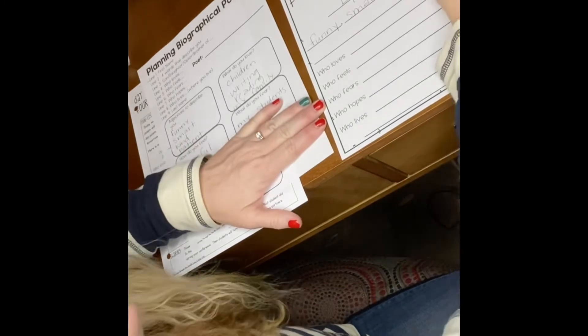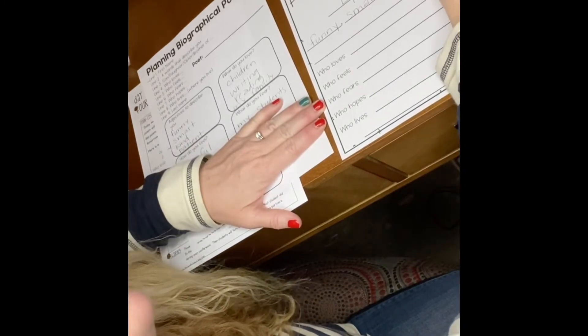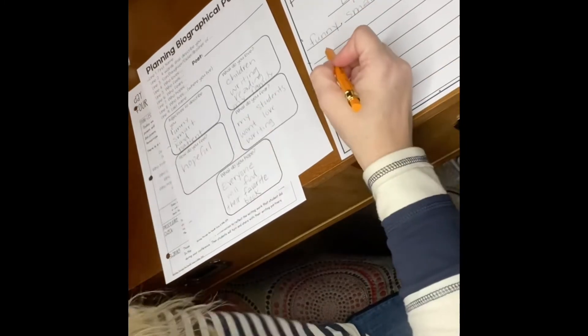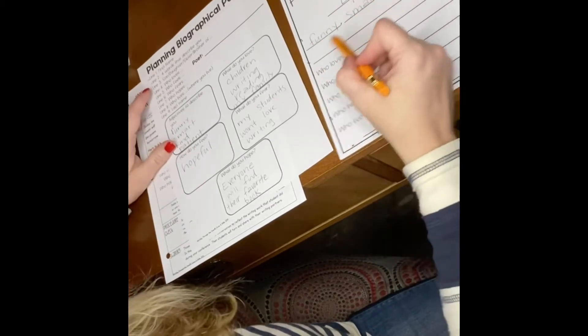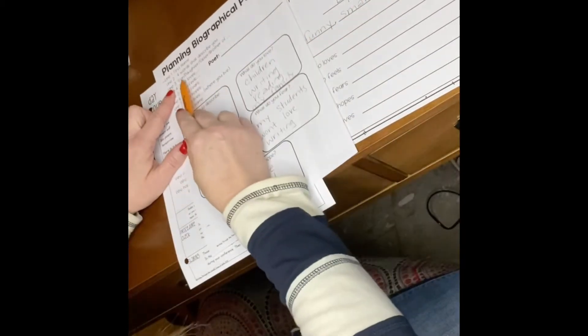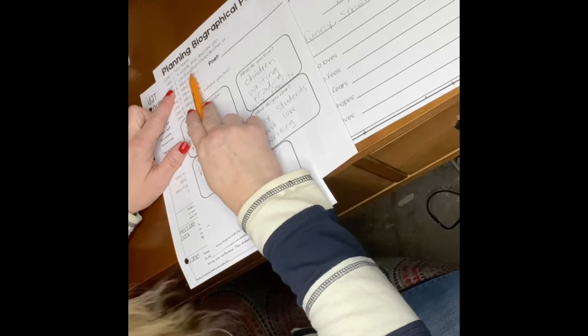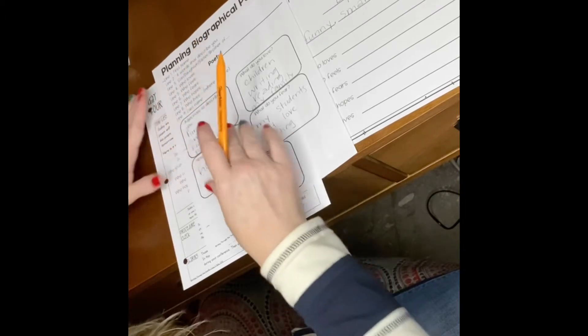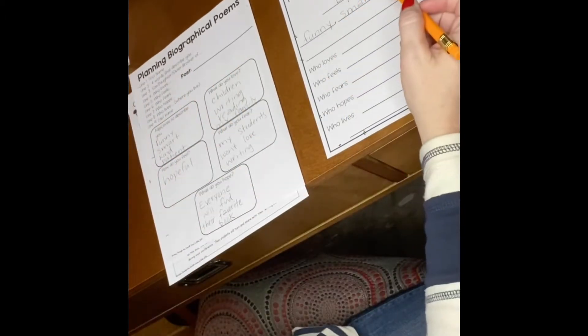But you don't have to think about what you're going to write because that is already on your page. Okay, so on line three you're going to say who you're the son of or who you're the daughter of, who you're the sister of, brother of. I could say mother of.